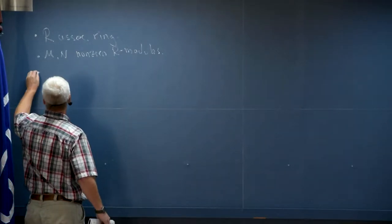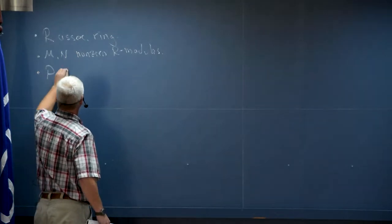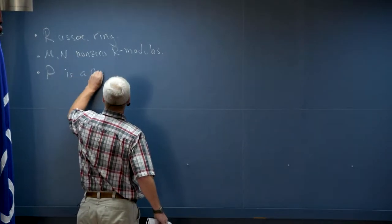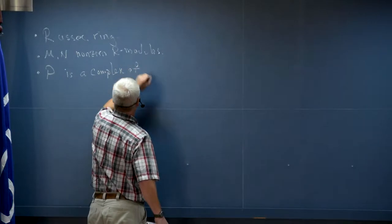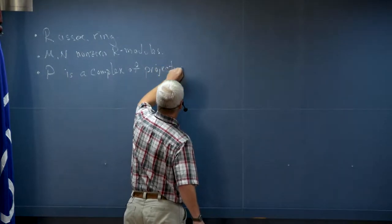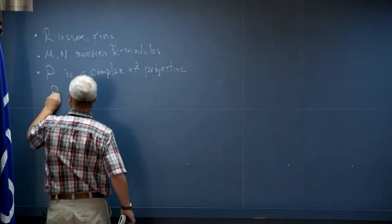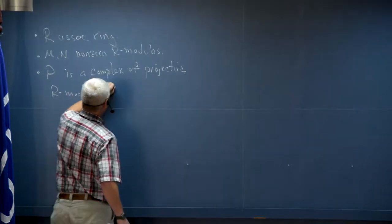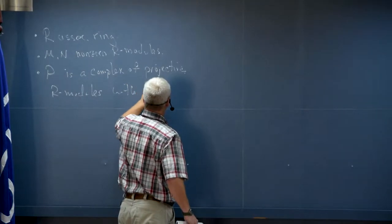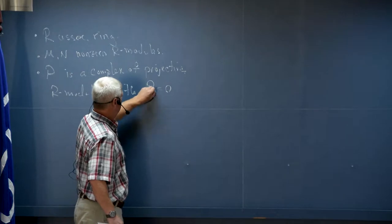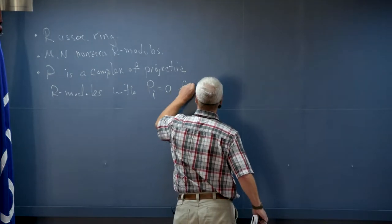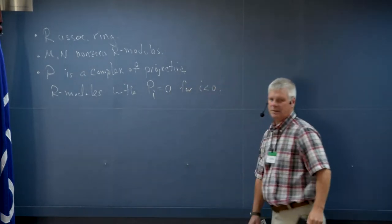P is going to always represent a complex of projective R-modules which is bounded below — I'll be assuming that the projectives are all zero for i less than zero. So, bounded at zero.